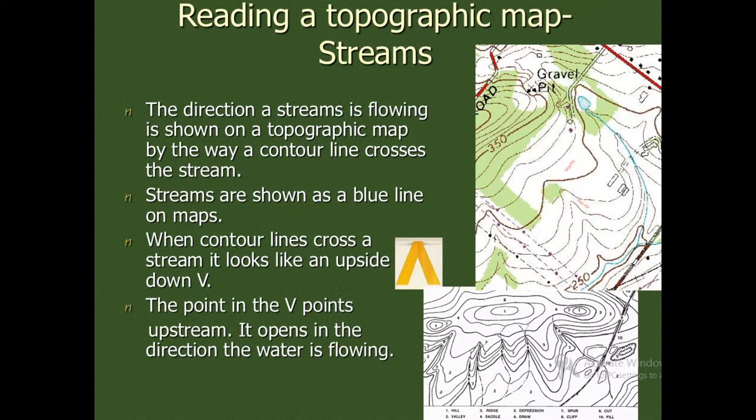If we want to locate streams on the map, the direction of stream flow is shown on a topographic map by the way a contour line crosses the stream. Streams are shown as blue lines on the map. When contour lines cross a stream, it looks like an upside-down V-shape. The point in the V-shape is upstream. It opens in the direction the water is flowing.